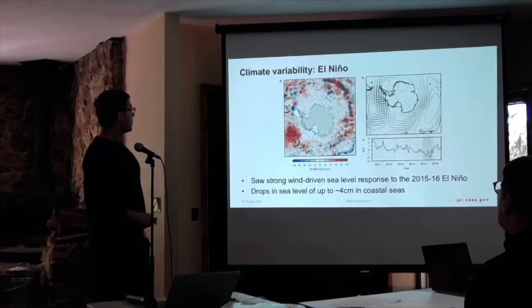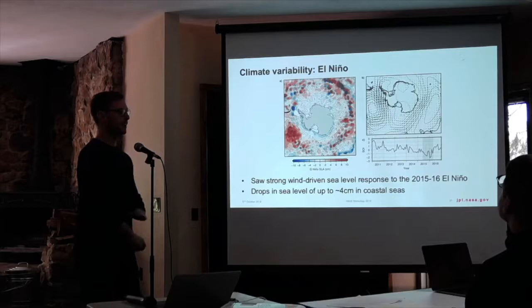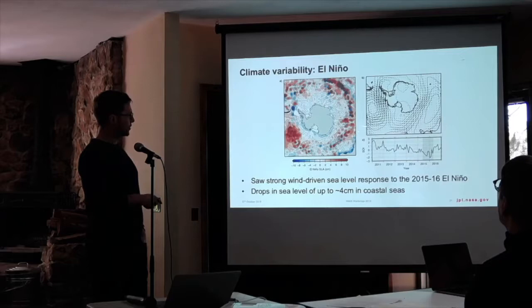We also see climate variability associated with El Niño. This is a composite of sea level anomaly during the strong 2015–16 El Niño event. There's a sea level pressure anomaly in the southern Pacific, which drives a high sea level anomaly down there. But it also causes a drop in sea level along the coast of West Antarctica.